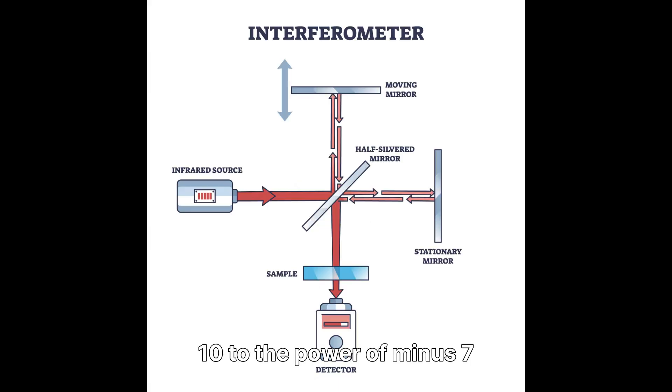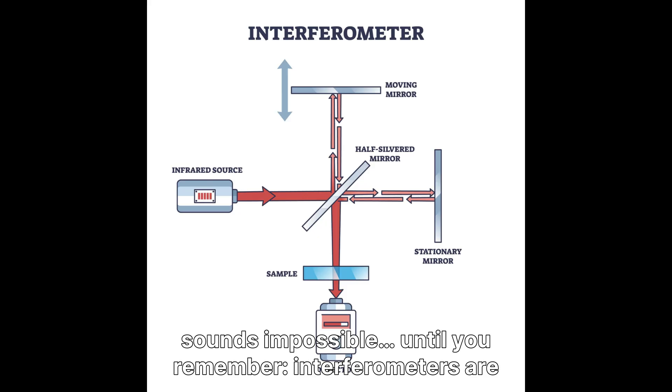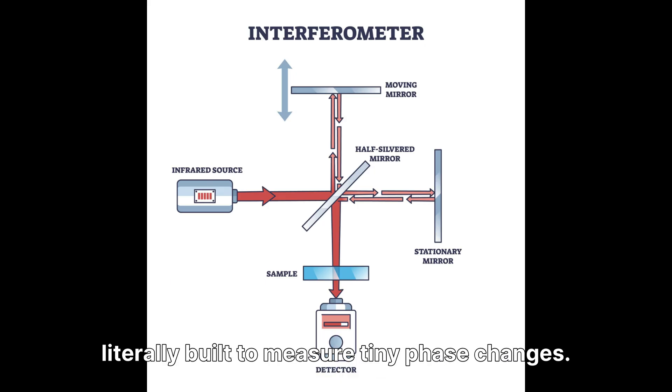10 to the power of minus 7 is the kind of tiny number that sounds impossible until you remember, interferometers are literally built to measure tiny phase changes.